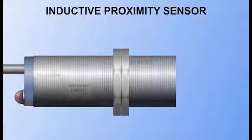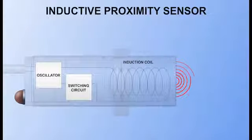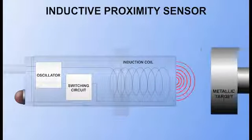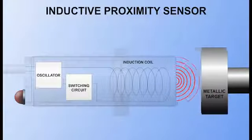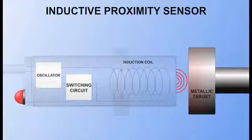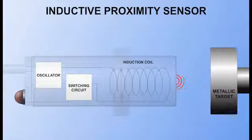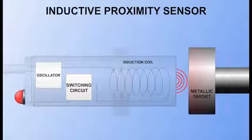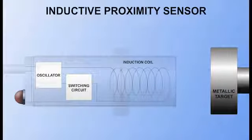Inductive PROX sensors are designed to emit an oscillating magnetic field. When a metallic target enters the field, the target absorbs some of the field energy, and the oscillations stop. This action triggers a switching circuit connected to the controller. Thus, when a target is sensed, the controller receives a signal that the target is in place.